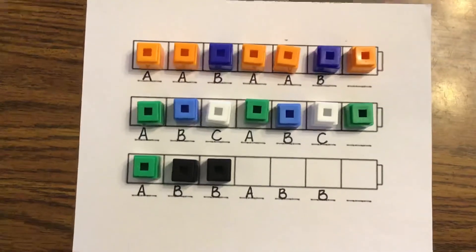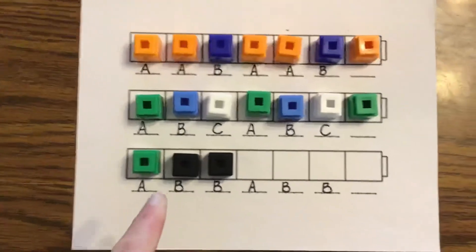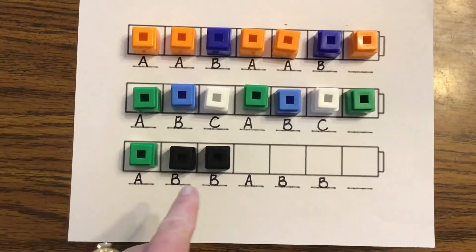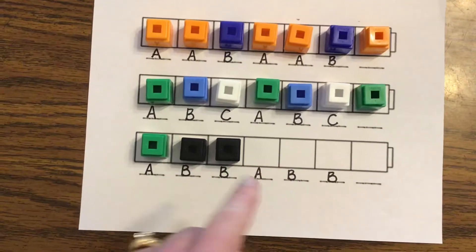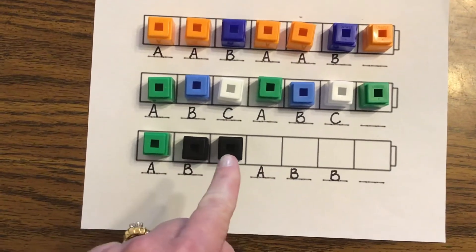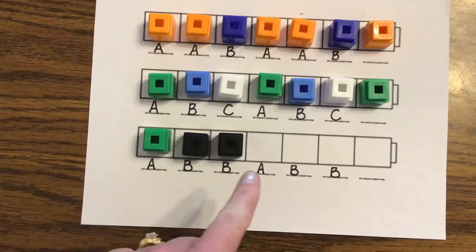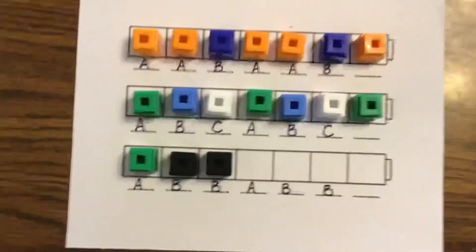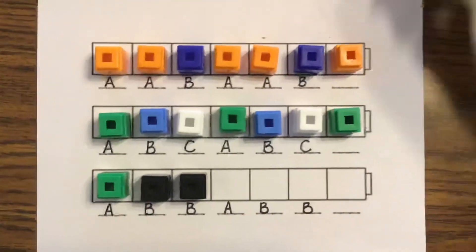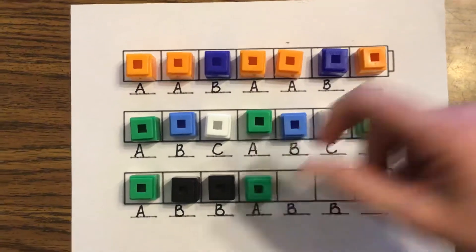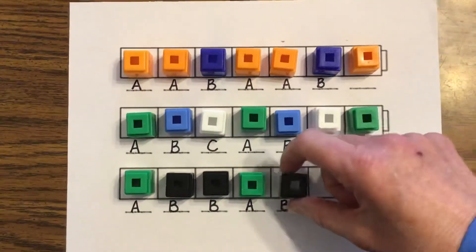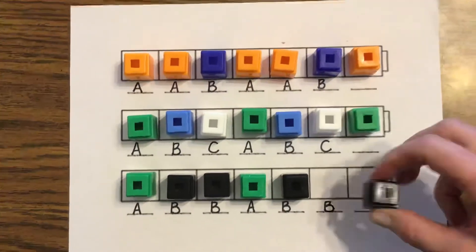Yeah. Okay. So I have green, black, black. A, B, B. What comes next? Green, black, black. Green, right. My A is a green. Green and then what? Right, black, black.